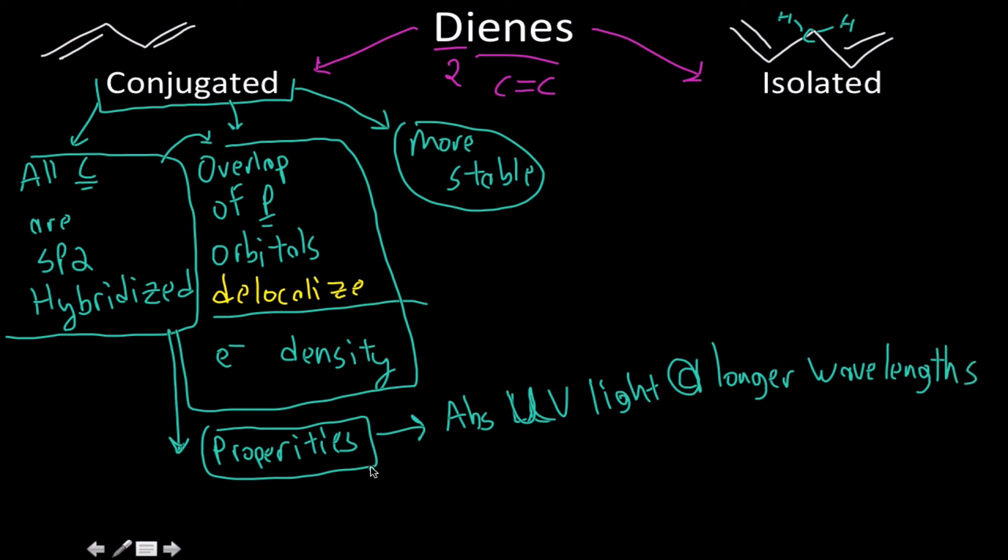Another thing that we could say about them is that, because of resonance, so this isn't really important, but because of resonance, the sigma bond of a conjugated diene tends to be shorter than the sigma bonds of isolated dienes, and that's really it as far as that goes.